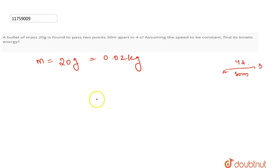What is given? We have distance given is 30 meter. We have time given is 4 seconds. What is not given is the velocity of the bullet. The bullet is moving.